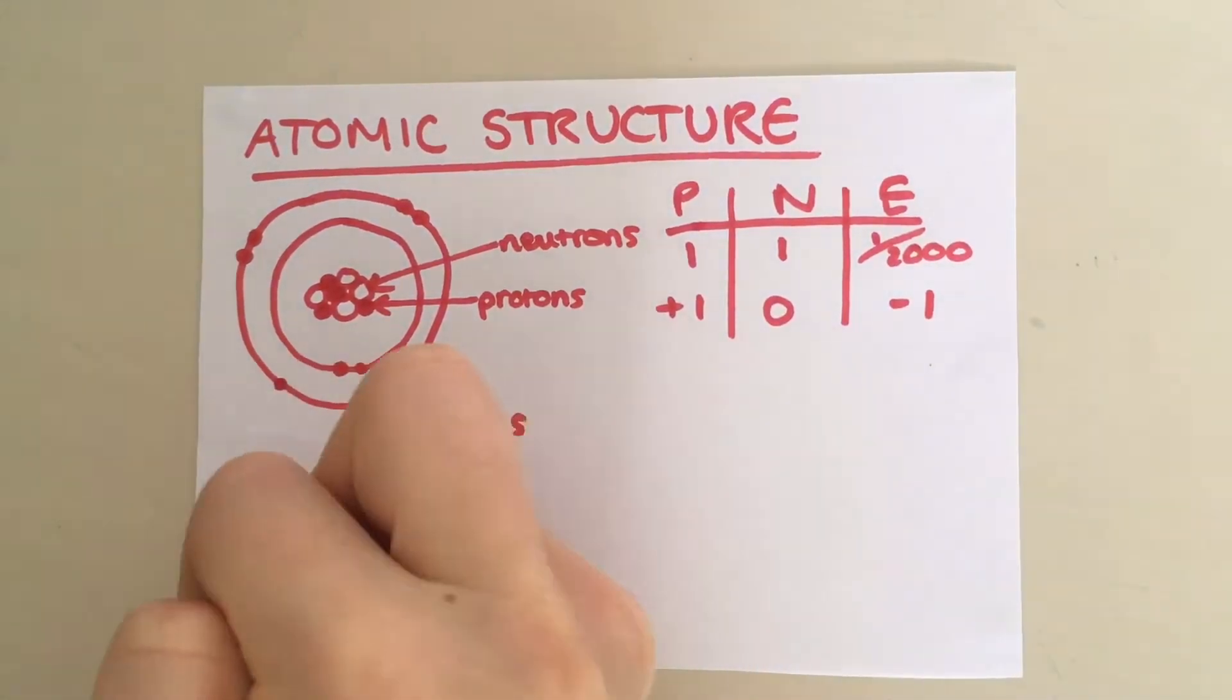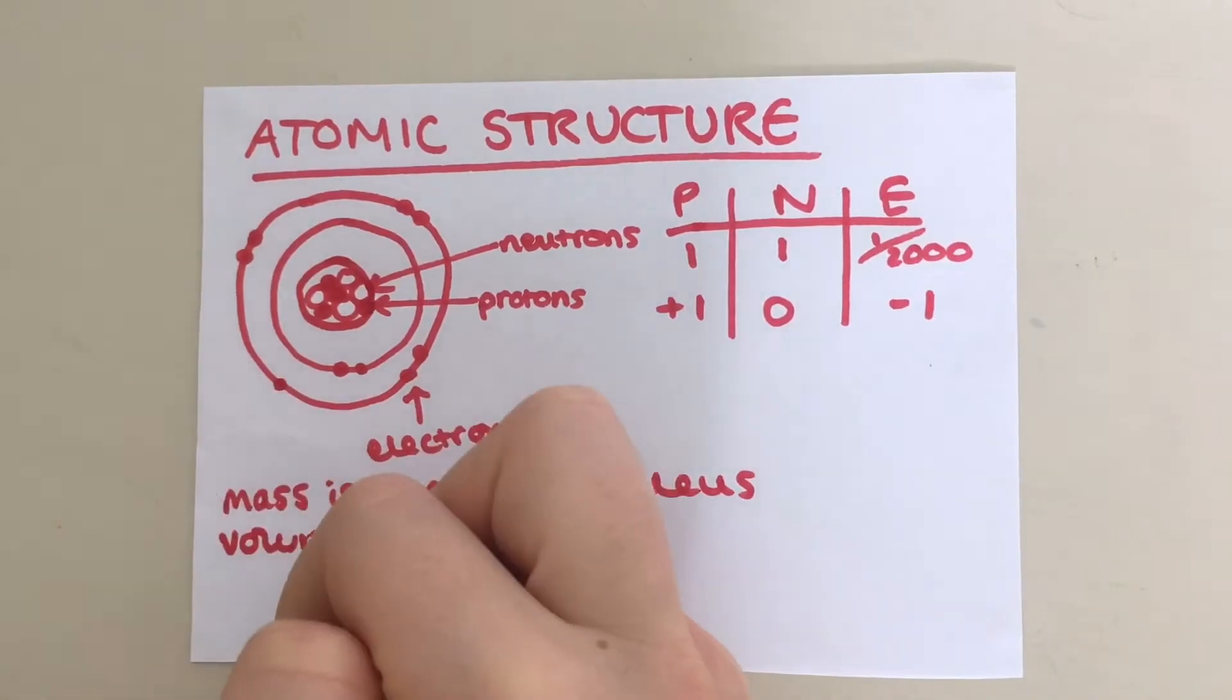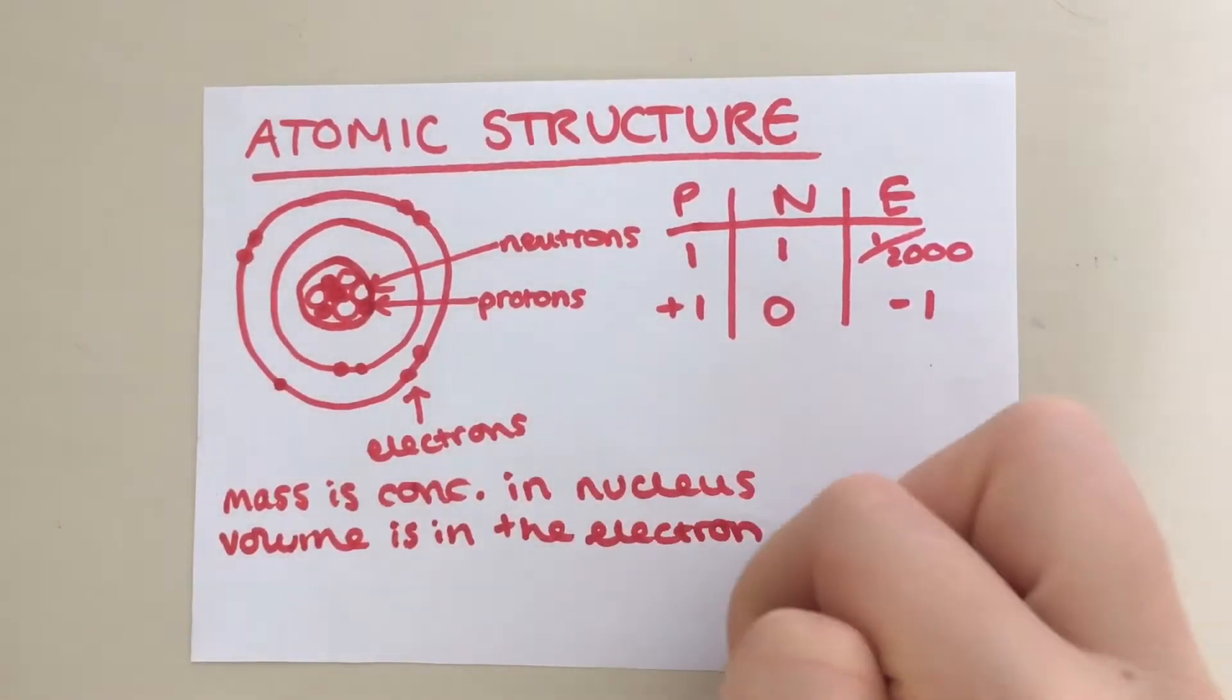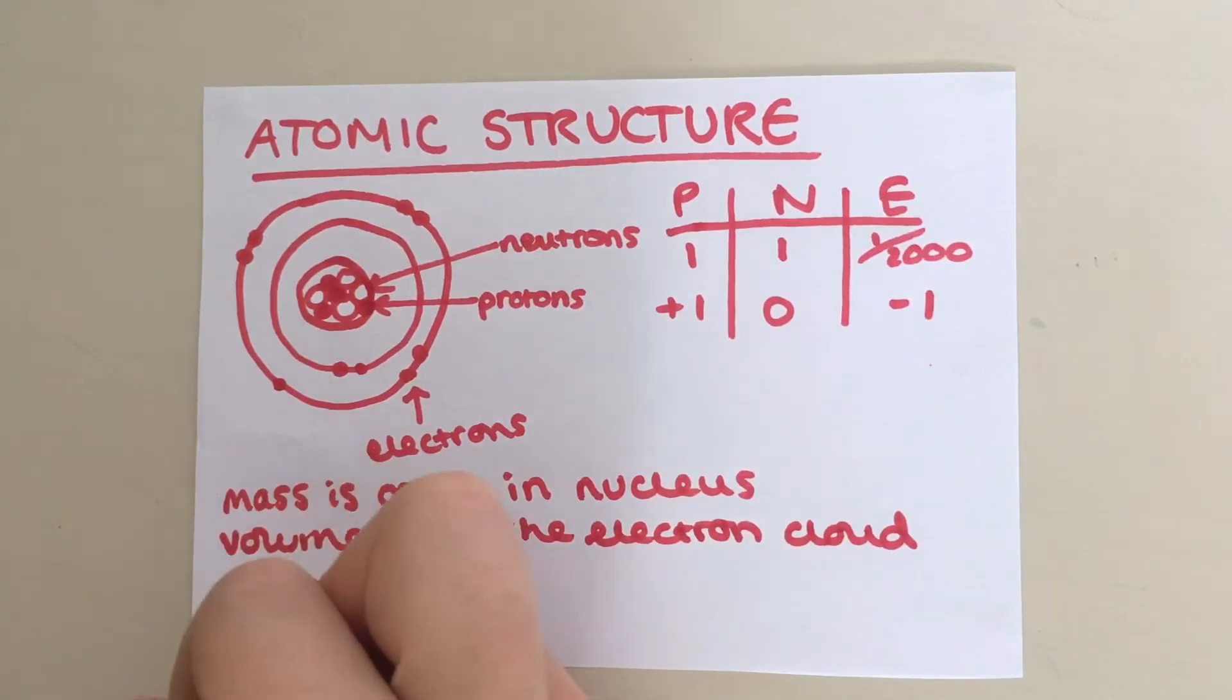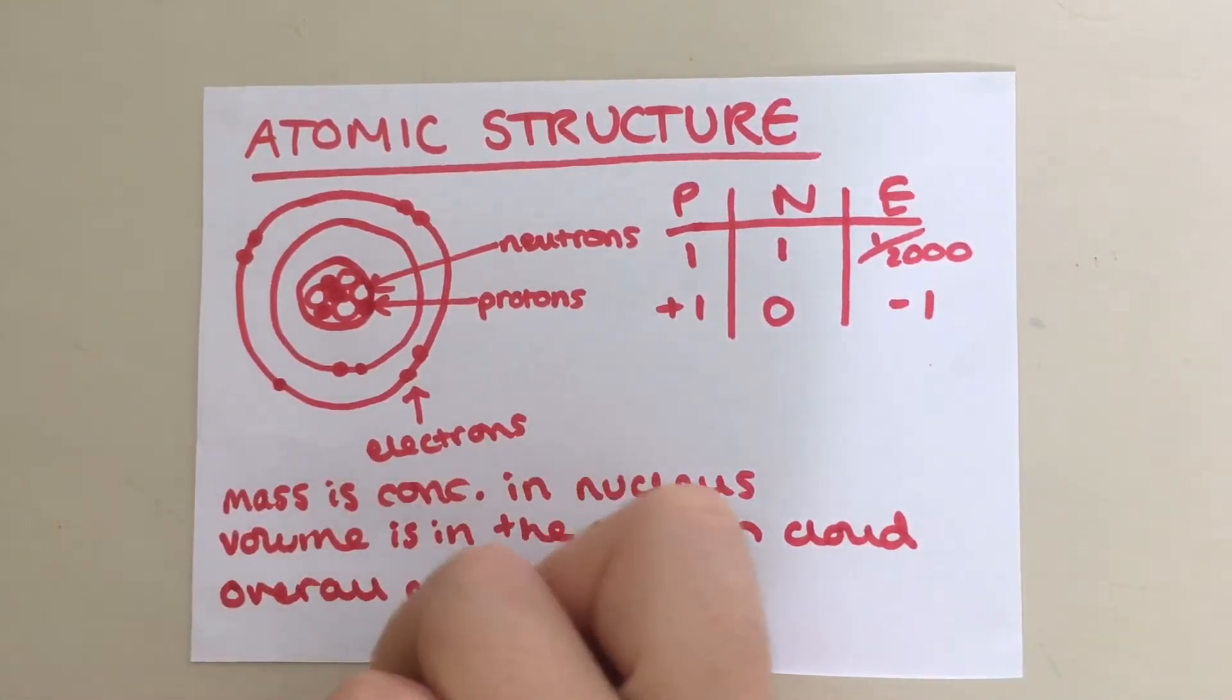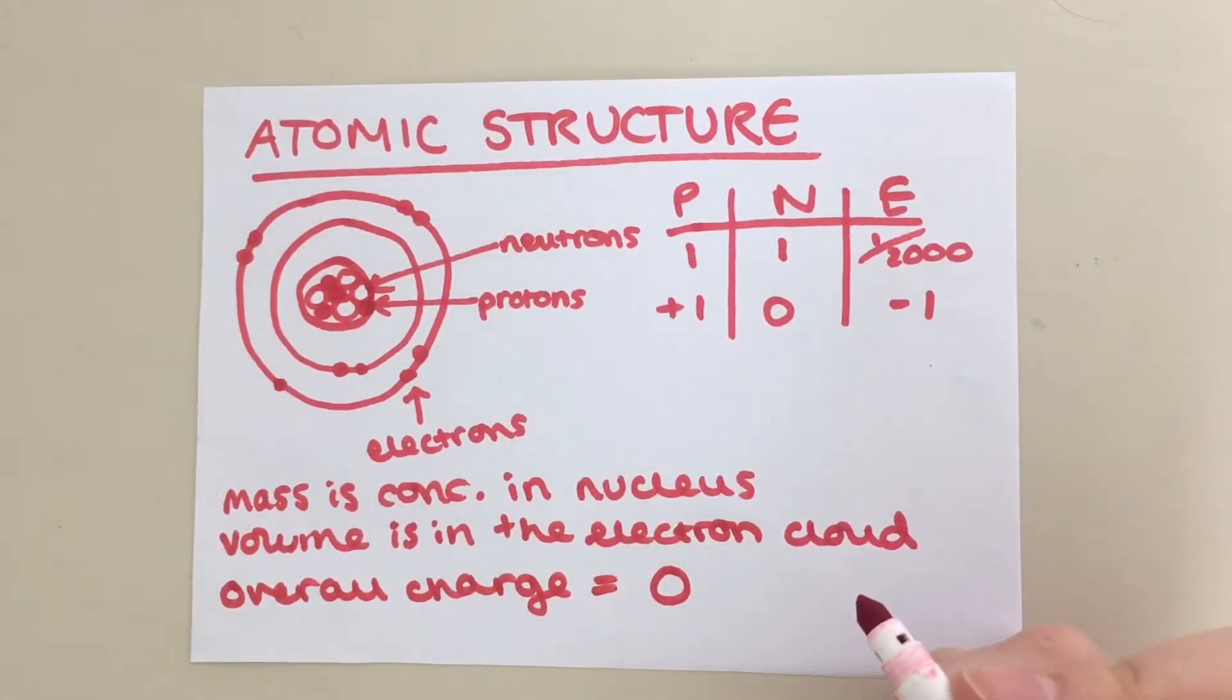The mass of an atom is concentrated in the nucleus whereas the volume is found in the electron cloud. Since there are always equal numbers of protons and electrons in an atom, the charges cancel out, so the overall charge of an atom is always zero. If an atom loses or gains an electron to form an ion, then the overall charge will no longer be zero.